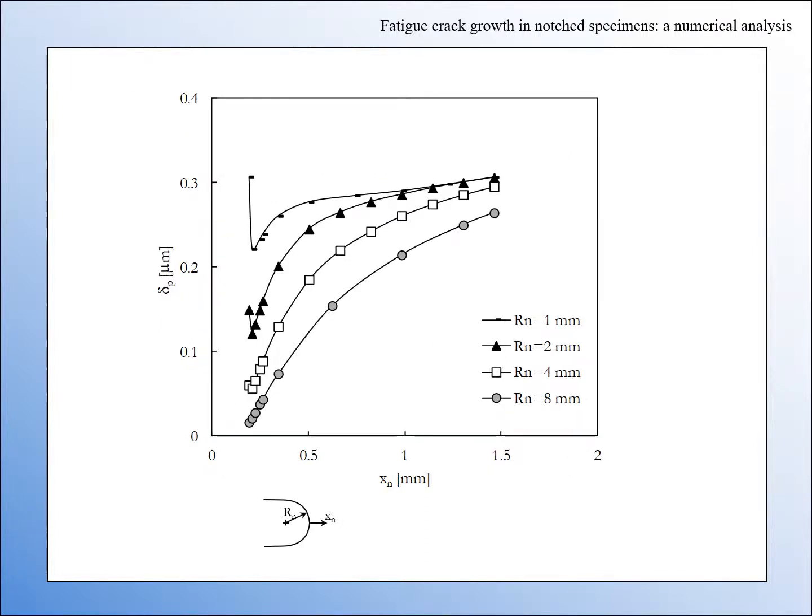This figure shows the variation of plastic CTOD with crack propagation. There is a general trend for the increase of plastic CTOD with crack growth and therefore of fatigue crack propagation. However, for notch radii of 1 and 2 mm, there is an initial decrease of plastic CTOD at the beginning of crack growth.